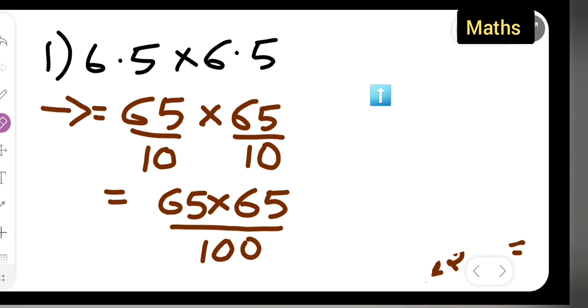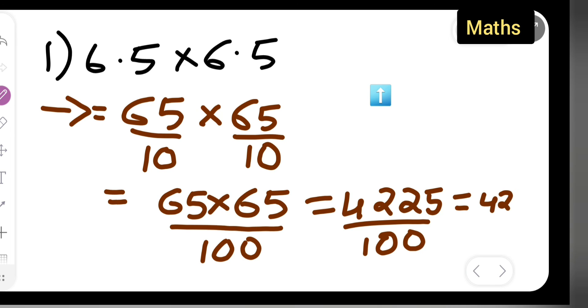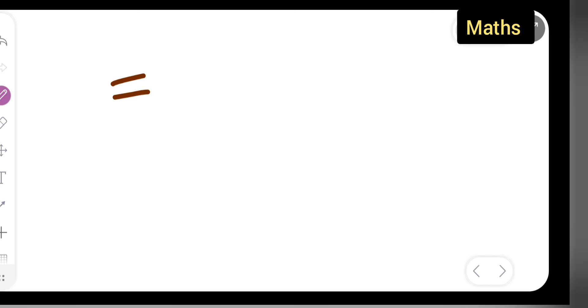So basically you can write down here 4225 upon 100. So decimal point will come where? 42.25. What is your answer? 4225 upon 100, right, so basically